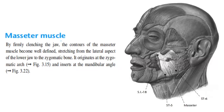Next, we have the masseter muscle. By firmly clenching the jaw, the contours of the masseter muscle become well-defined, stretching from the lateral aspect of the lower jaw to the zygomatic bone. It originates at the zygomatic arch and inserts at the mandibular angle.